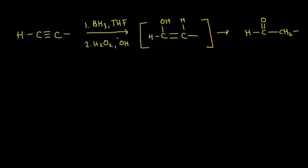Here's the hydroboration oxidation of alkyne reaction. We start with our alkyne — usually it's a terminal alkyne. So here's your hydrogen, and on the other side of the triple bond, there's some R group attached to this carbon. To our alkyne, we're going to add, in the first step, borane BH3 in THF as our solvent.